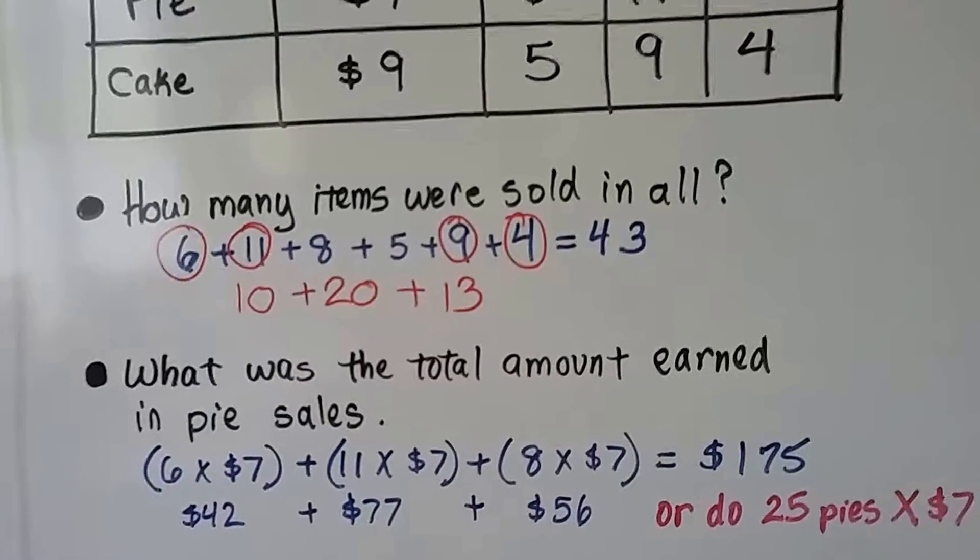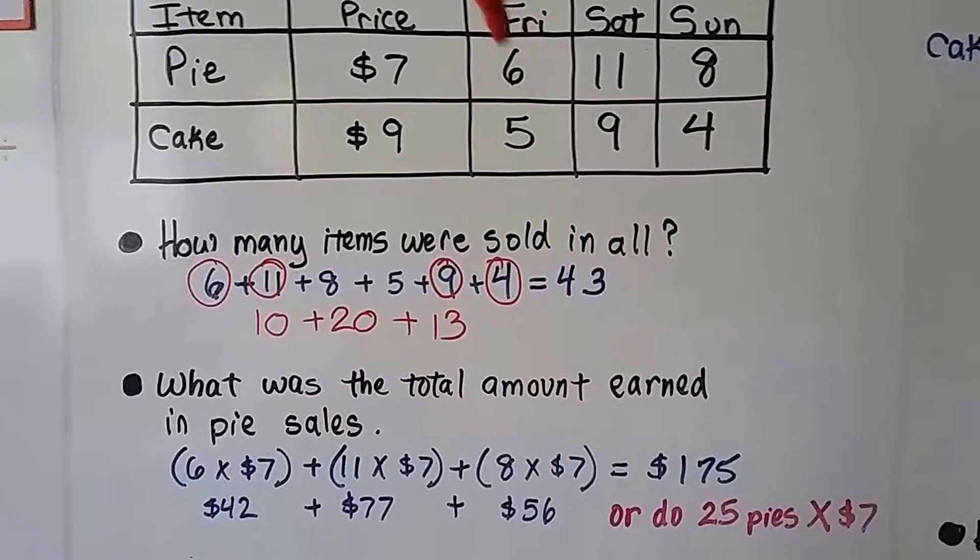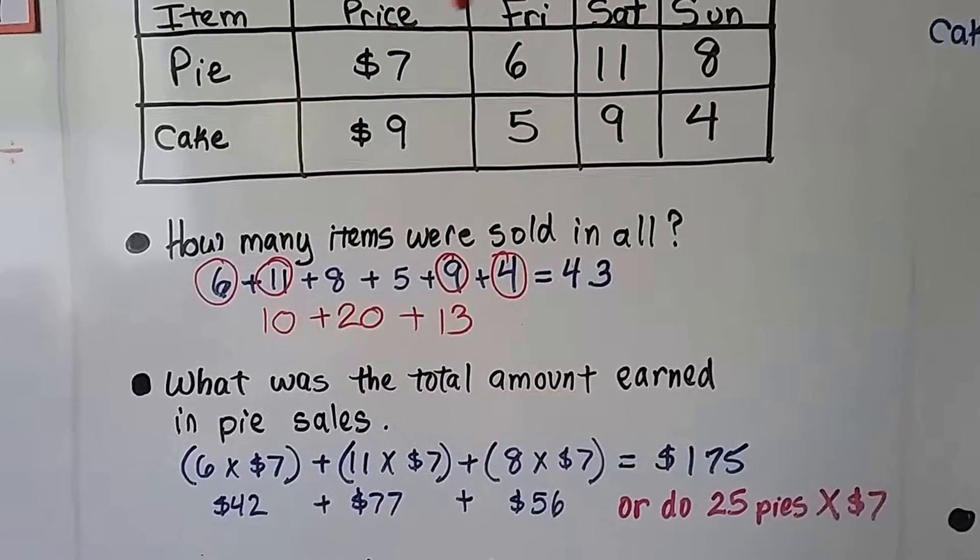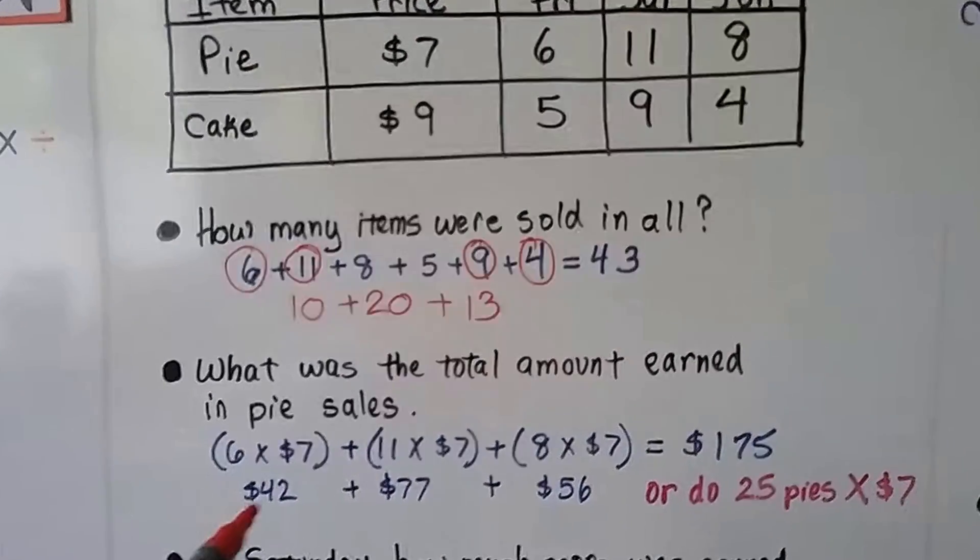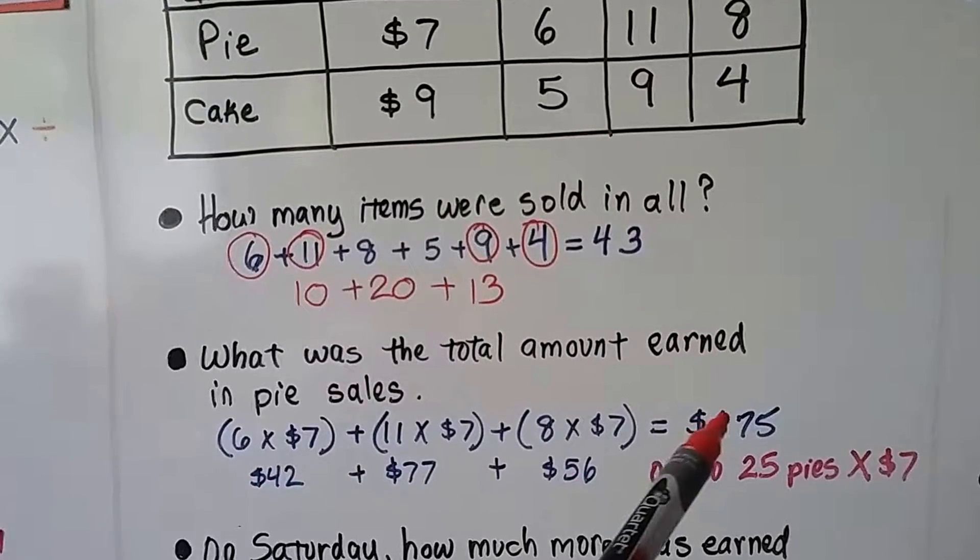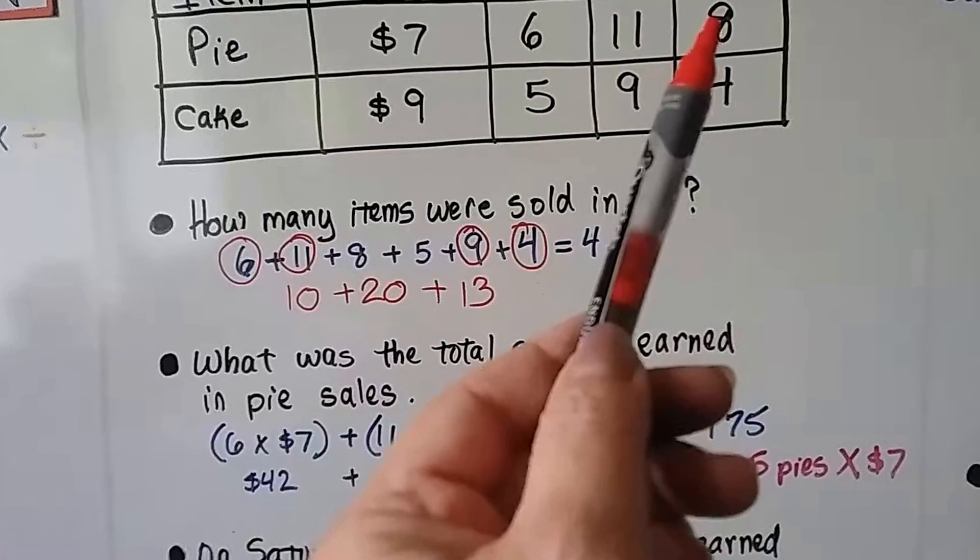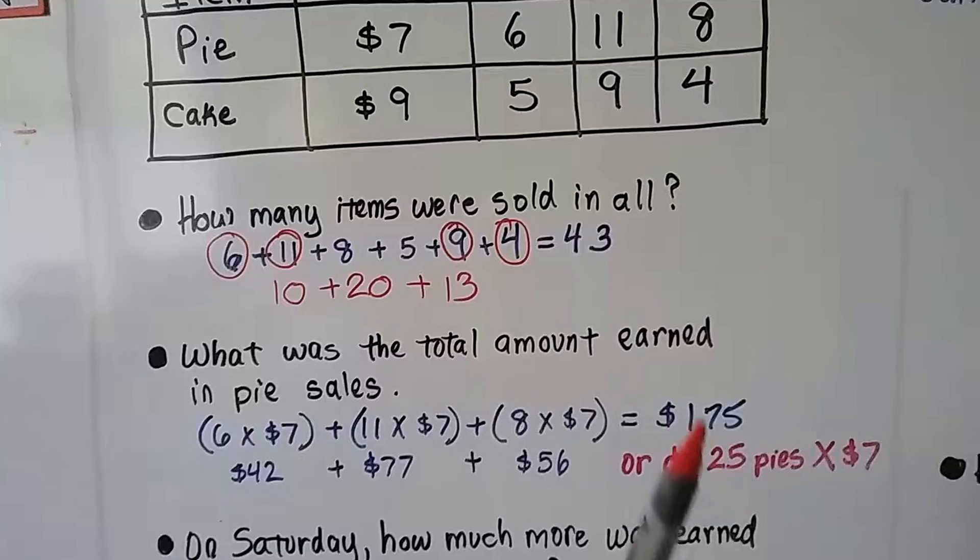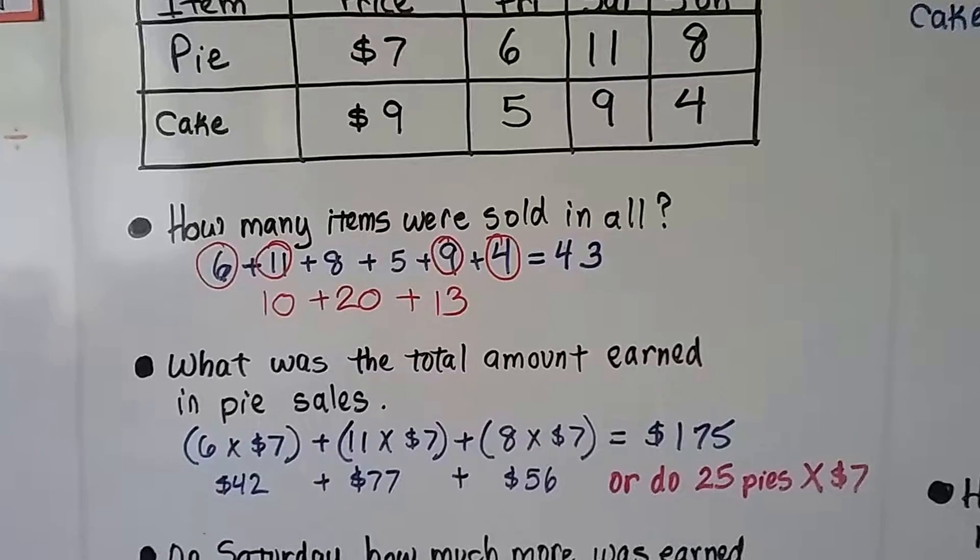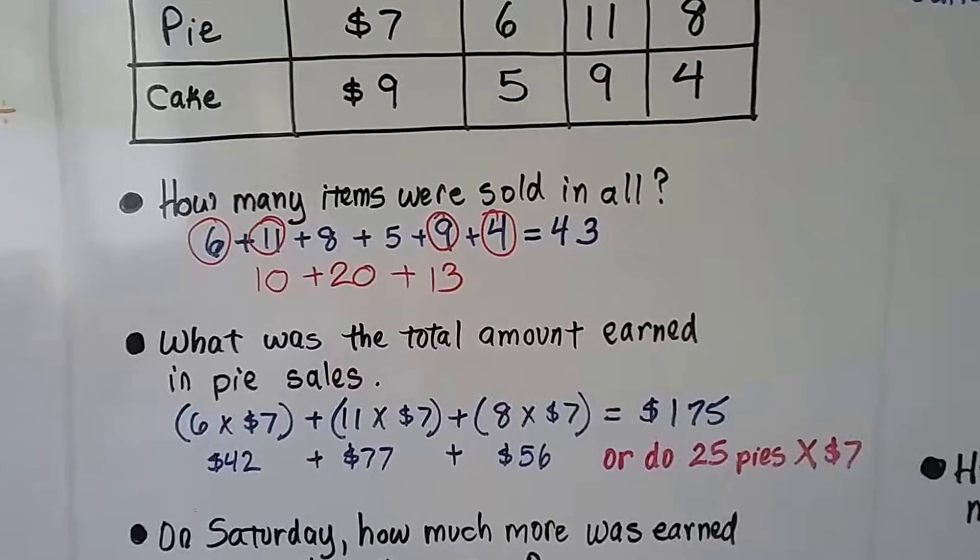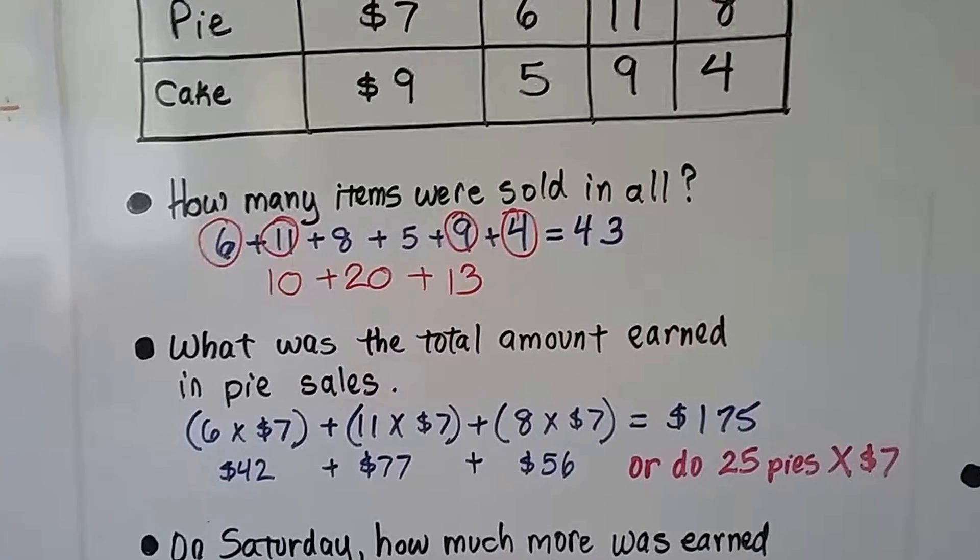What was the total amount earned in pie sales? There's two ways we could do this. We can multiply the 6 pies times $7 from Friday, and the 11 pies times $7 from Saturday, and the 8 pies times $7 from Sunday, and then total up all those products to get a sum. Or we could add 6, 11, and 8 to get 25, and then multiply that by 7. We're still going to get $175. Sometimes there's more than one way to do something. I love cats, and I would never skin one, but there's an old saying that says there's more than one way to skin a cat.